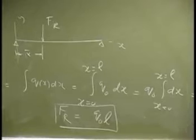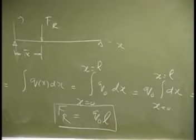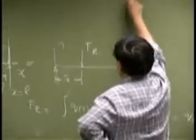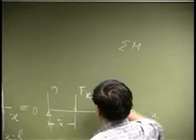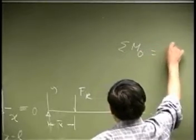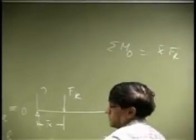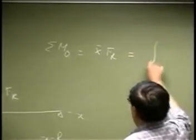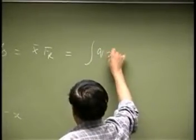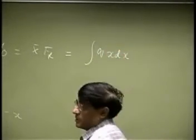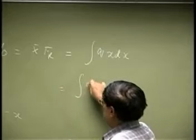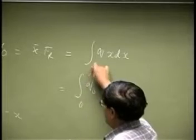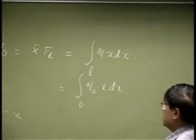The next thing we need is this: if I sum the moments, we take this point as O, then it's x bar times FR, and that we know is the integration of x times Qx dx. So that will be Q0, x remains, x dx, going from 0 to L.